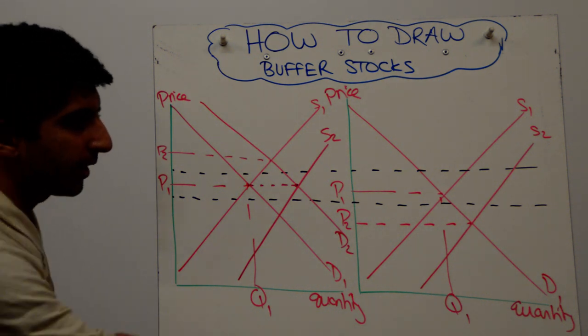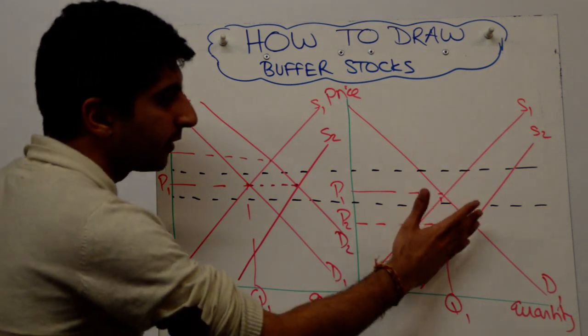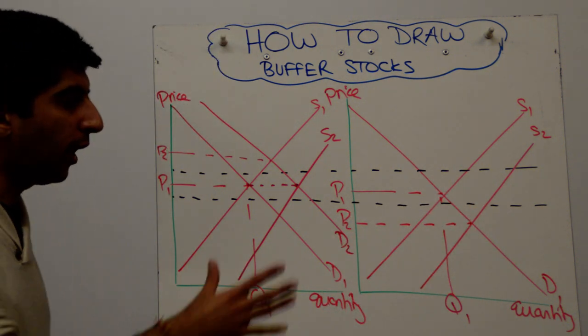Now that is not acceptable. Don't worry about the quantity because the whole point is we're trying to rectify this. So the government would say, well, that's not good enough. That price is too low. It's going to harm producers. We can't let that price continue.